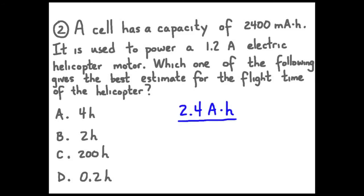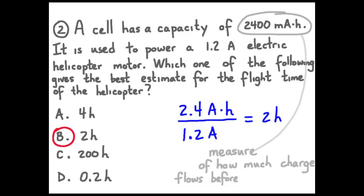That's 2.4 amp hours. If we divide that by 1.2 amps, that gives us two hours, two hours that we'll be able to supply 1.2 amps. Our answer is B. Remember, the 2400 milliamp hours is a measure of how much charge flows before we have to recharge.